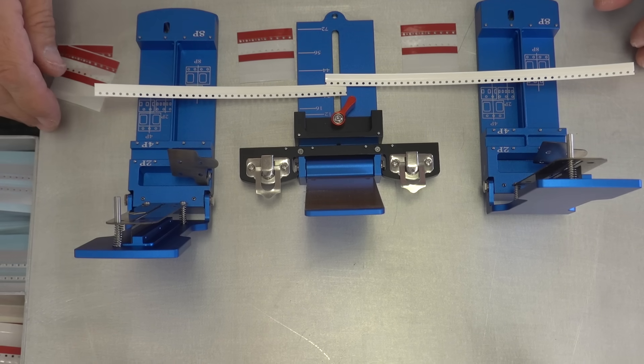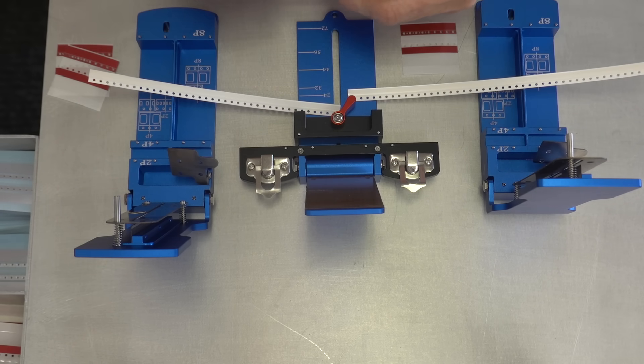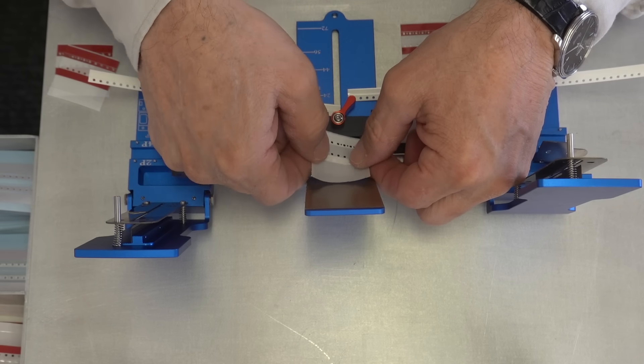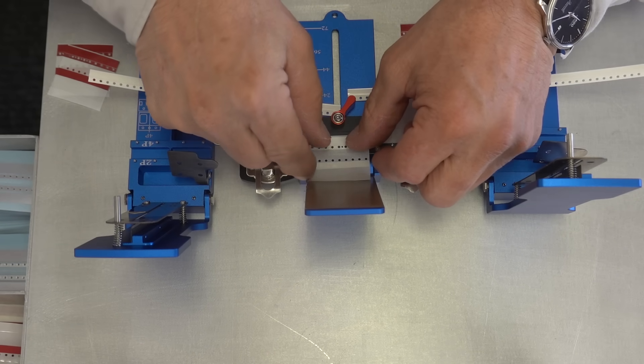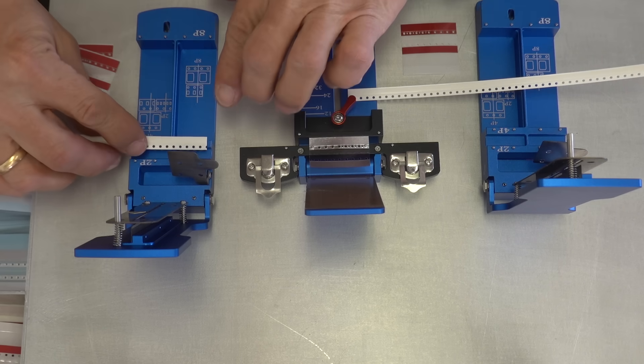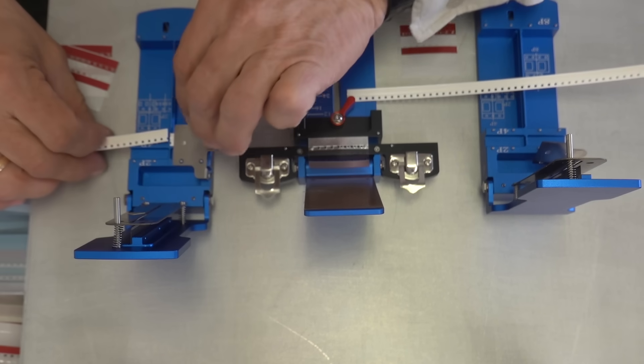I'll be demonstrating the mobile splice card for Fuji red splice tapes. Very simple to use. We will place the splice tape in the jig, remove the liner, discard the liner.